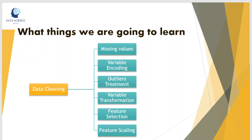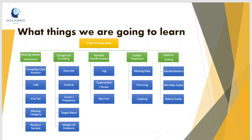Now let's talk about the interesting part of this series — what we are going to learn. Data cleaning in general has six steps. There are many things you can do with a dataset, but in general these six are applied in most projects. Starting with missing values, we are going to learn five different techniques. Once we understand each technique, we'll do a Python implementation by building a Python function or using the sklearn library — it's theory plus practical, which is the best way to learn.